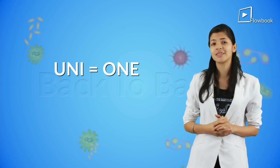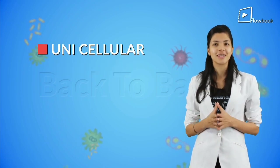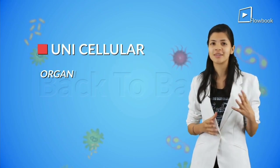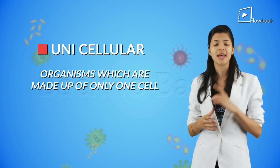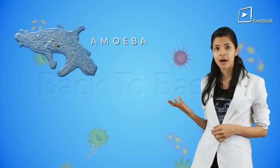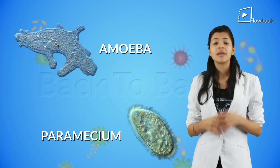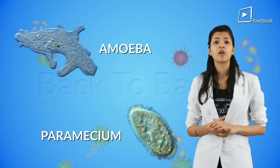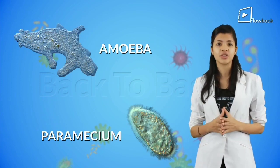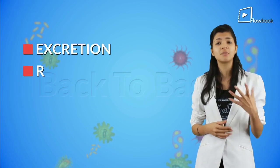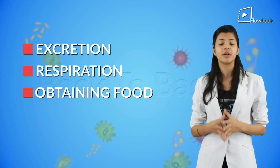So, can you guess what unicellular means? Yes, it means organisms that are made up of only one cell. For example, amoeba and paramecium. That one cell is capable of performing all basic operations such as excretion, respiration, obtaining food, etc.